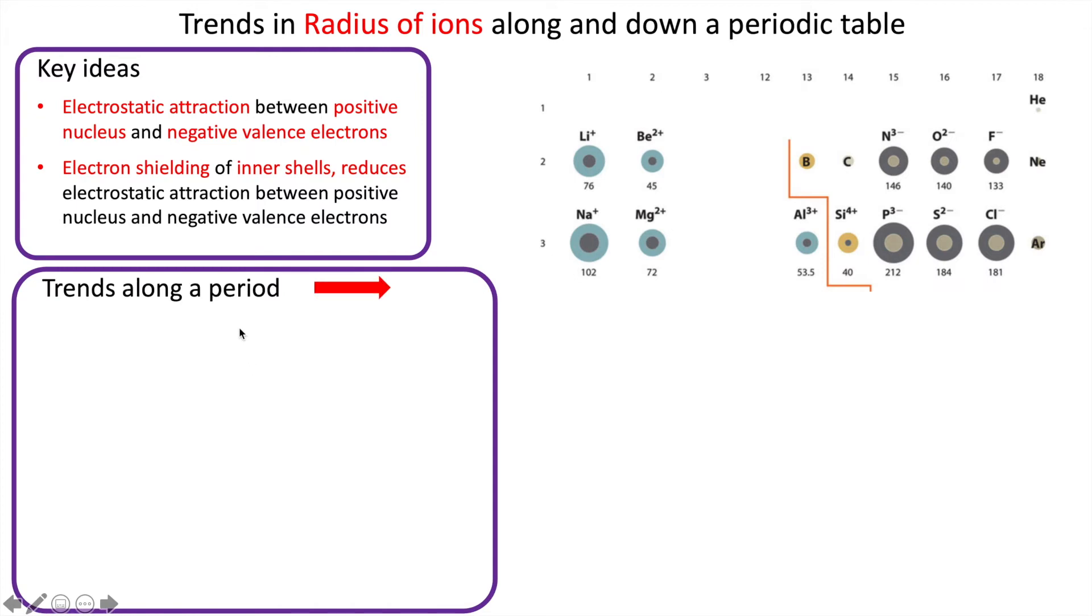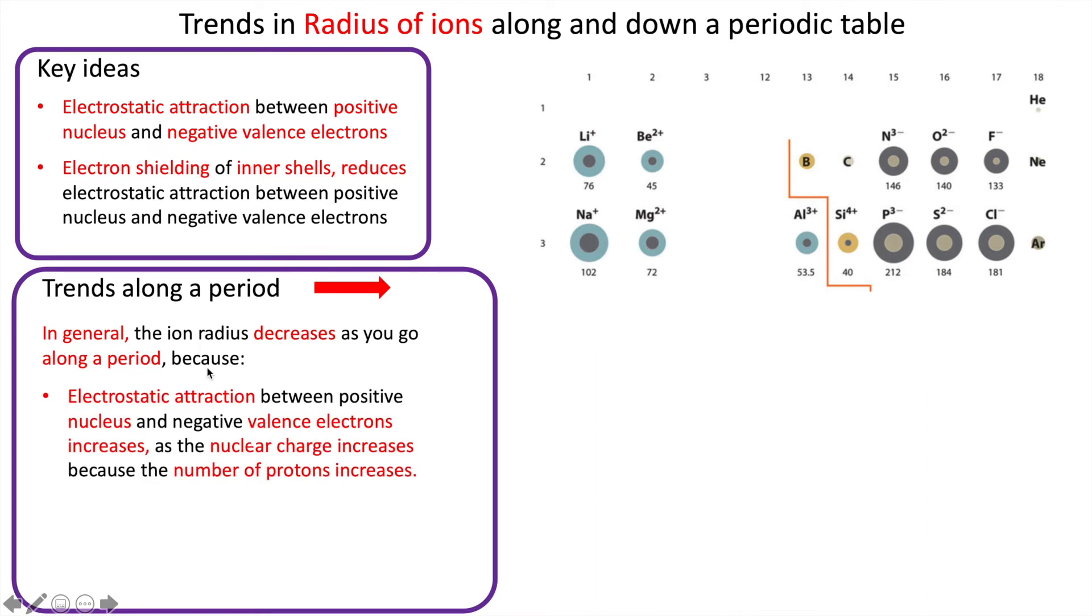So if you have a look, trends along a period. So you can say in general the ion radius decreases as you go along a period because exactly the same as for the radius of an atom, the electrostatic attraction between the positive nucleus and the negative valence electrons increases as the nuclear charge increases because there are more protons.